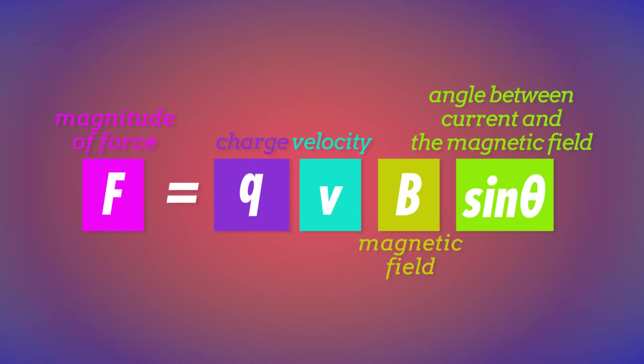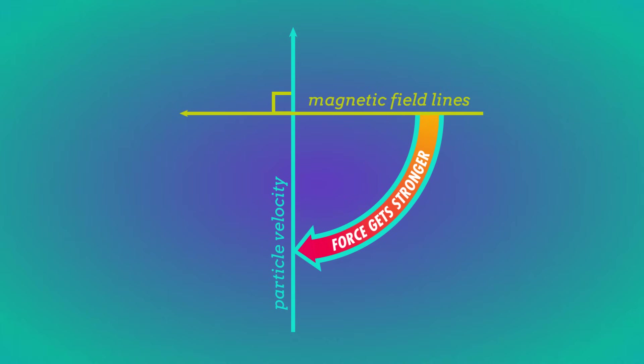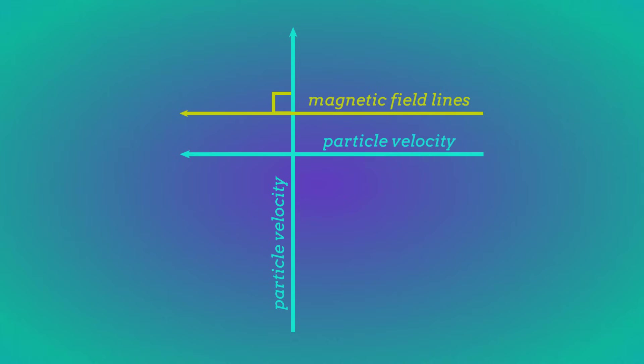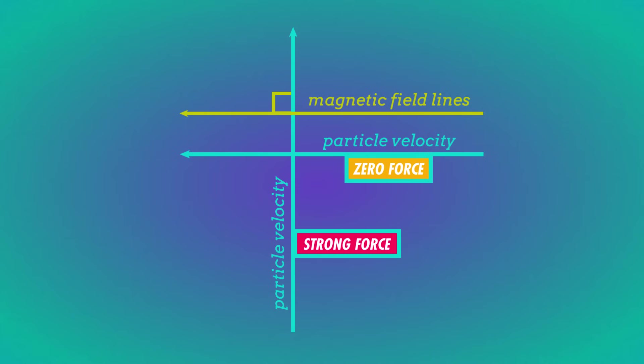Like the force on a current running through a wire, the force on a single electric charge depends on four factors. The force is stronger the closer to perpendicular the charge's velocity is to the magnetic field lines – if the velocity is parallel to the field lines, there's no force at all. Second, the more charge the particle has, the stronger the force. And third, the faster the particle is moving, the stronger the force.